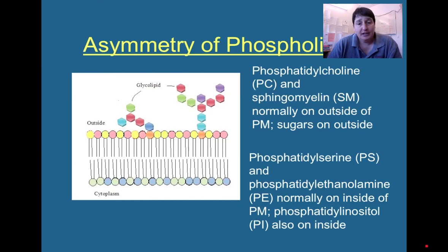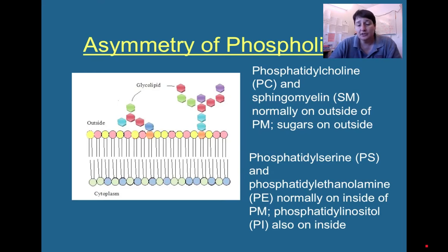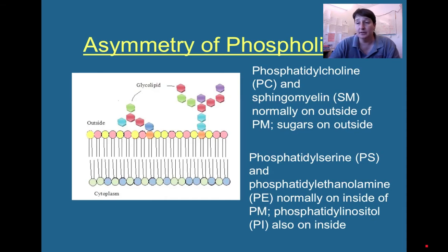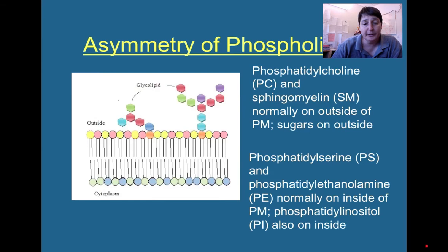Phosphatidylcholine is PC, sphingomyelin is SM—PC and SM are normally on the outside, while phosphatidylserine and phosphatidylethanolamine are normally on the inside. Lipids can be modified with sugars and are called glycolipids, and you will only ever see glycolipids facing the outer region—there are never sugar molecules facing the cytoplasmic side of the cell. Another phospholipid called phosphatidylinositol (PI) is mostly on the inside and is really important for cell signaling.